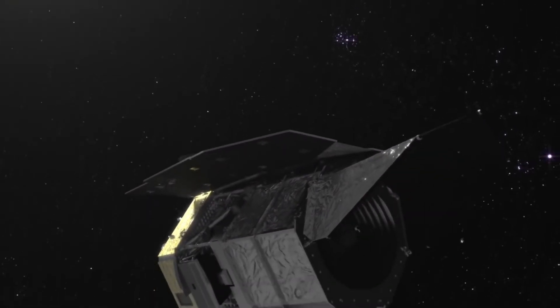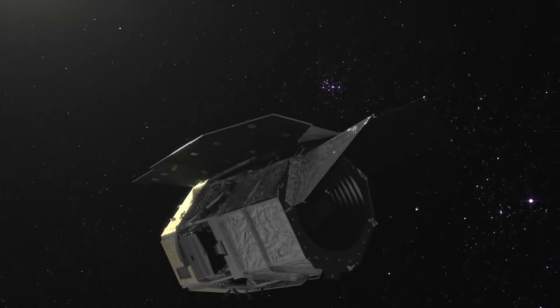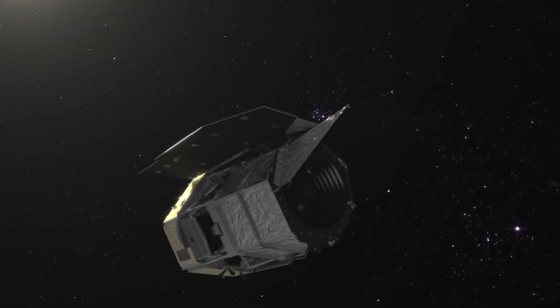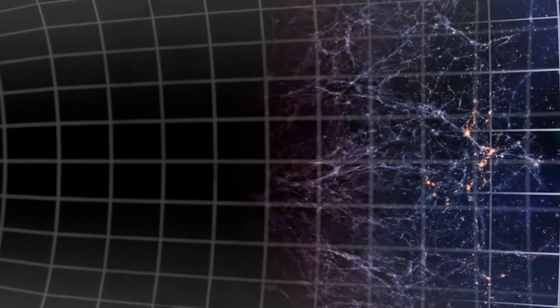This new form of dark matter detection relies on using an infrared telescope to measure the temperatures of different exoplanets throughout the cosmos and using that information to better map the dark matter out in space.